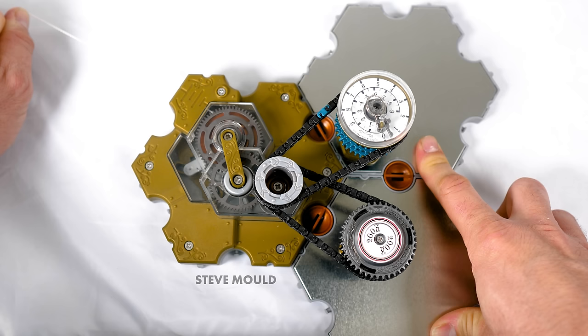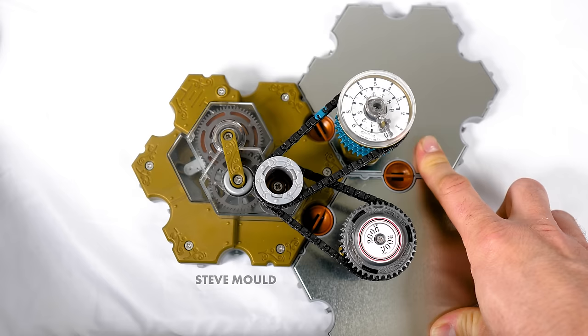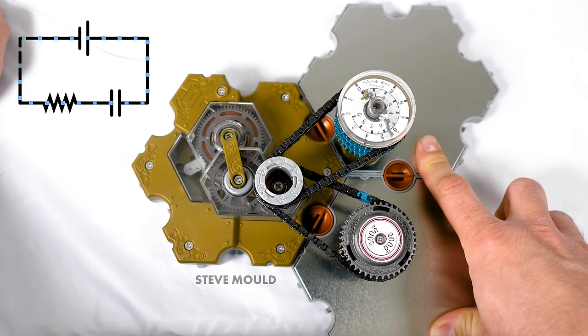Look what happens if I connect a resistor and a capacitor to the battery. You might think that these are in parallel. But look, once the capacitor is charged up, the current stops flowing through both the capacitor and the resistor. That's because this is actually a series circuit.